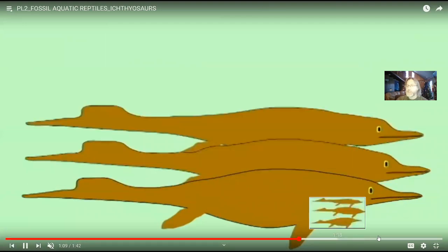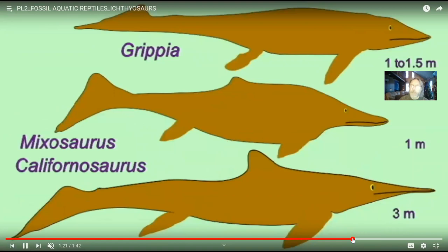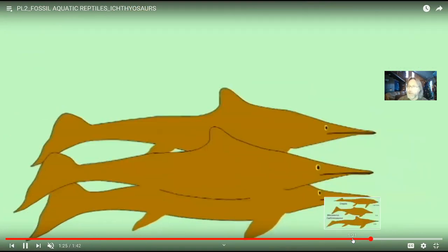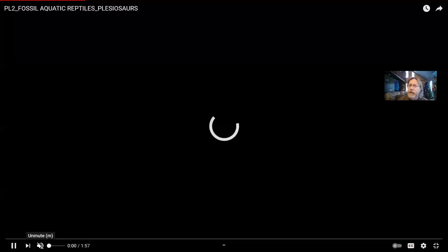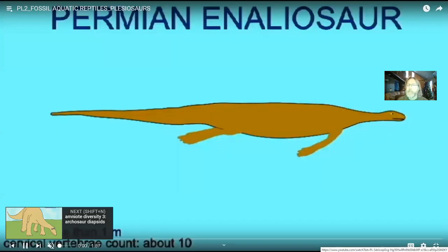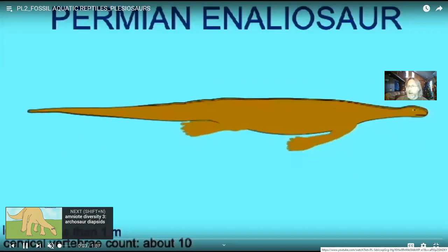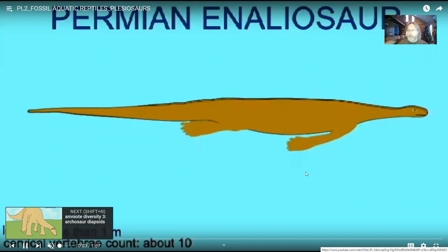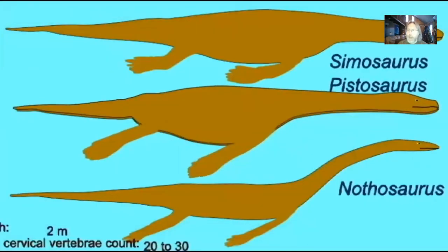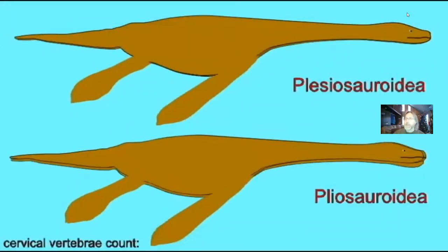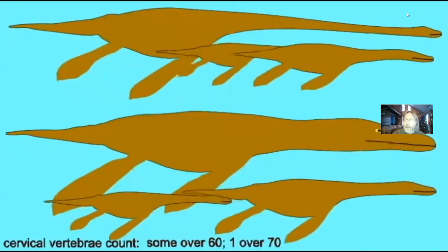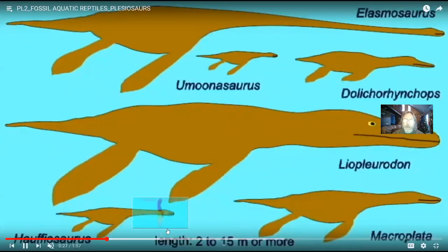There are lots of lineages here. There are the ichthyosaurs — those that survive the end-Triassic extinction then have a rather dolphin-like body shape, and they are common during the later Mesozoic era. There are other lineages as well, such as the plesiosaurs, which lengthened their necks and became dominant marine predators. Some of these are approaching 50 feet in length. We see gradual transitions where the number of vertebrae in the necks gradually increase and the limbs gradually become more flipper-like.